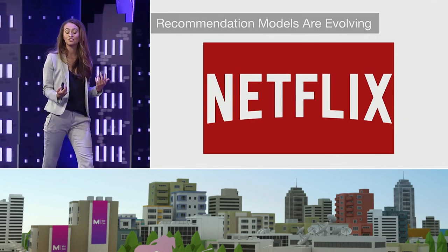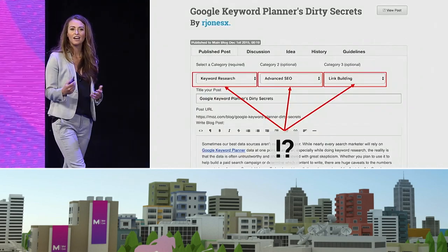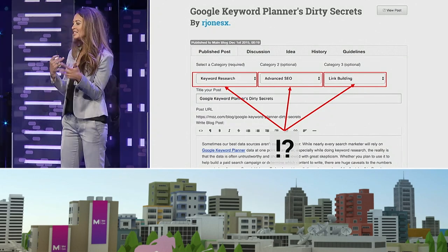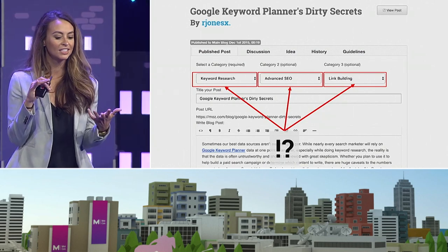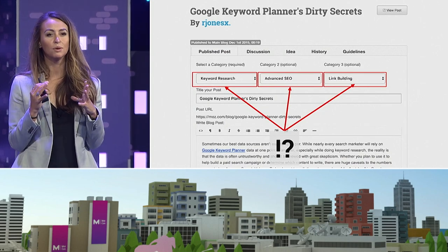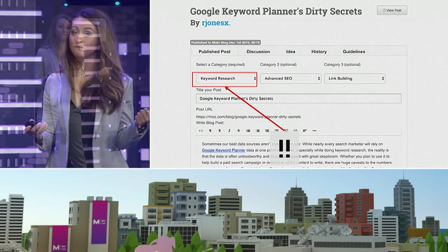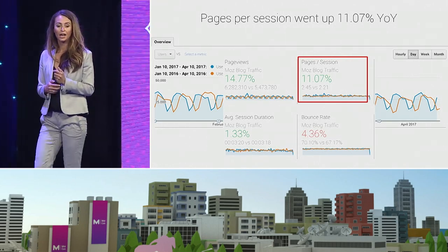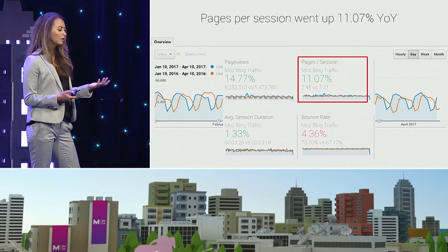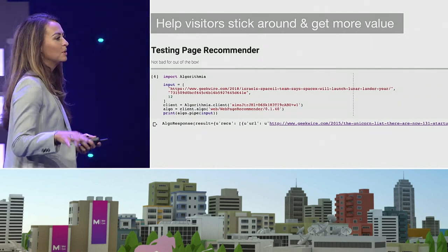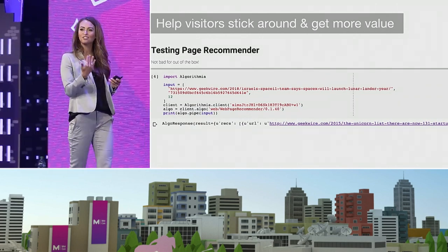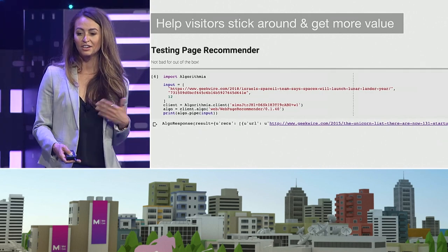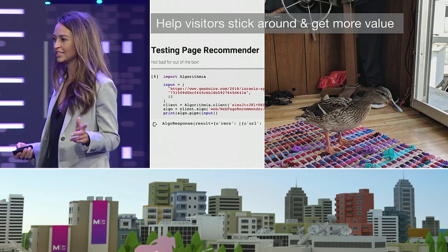Recommendation models are evolving and getting better. Last year at Moz, our blog was pulling suggestions for next posts from three different categories, which wasn't proving successful because it wasn't specific to the content someone was on. I fought for it to go to just that first primary category, and the results were amazing — pages per session on our blog went up over 11% over the previous period. There's no reason you can't take these models and apply them to real live users on your site: what did they visit last time, what are they interested in, what have they already read?